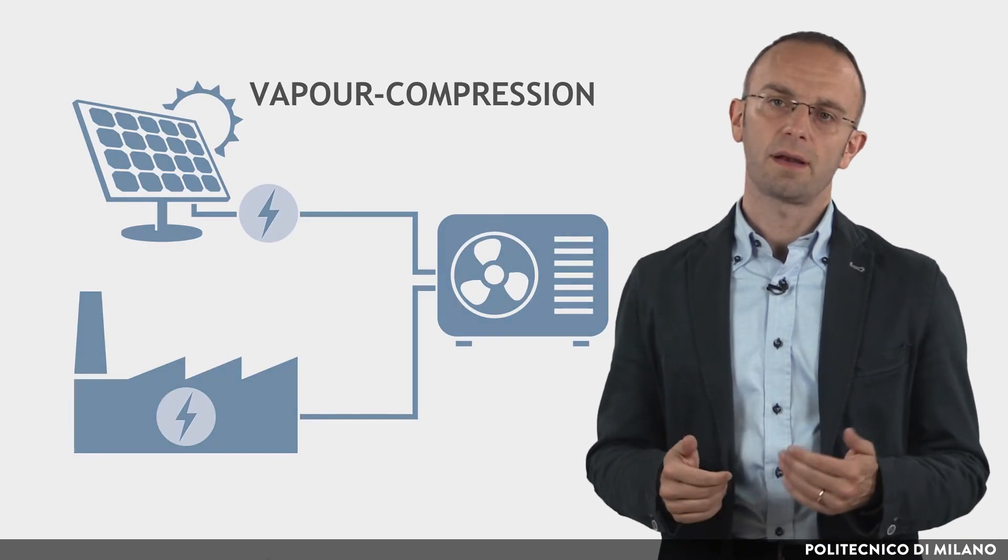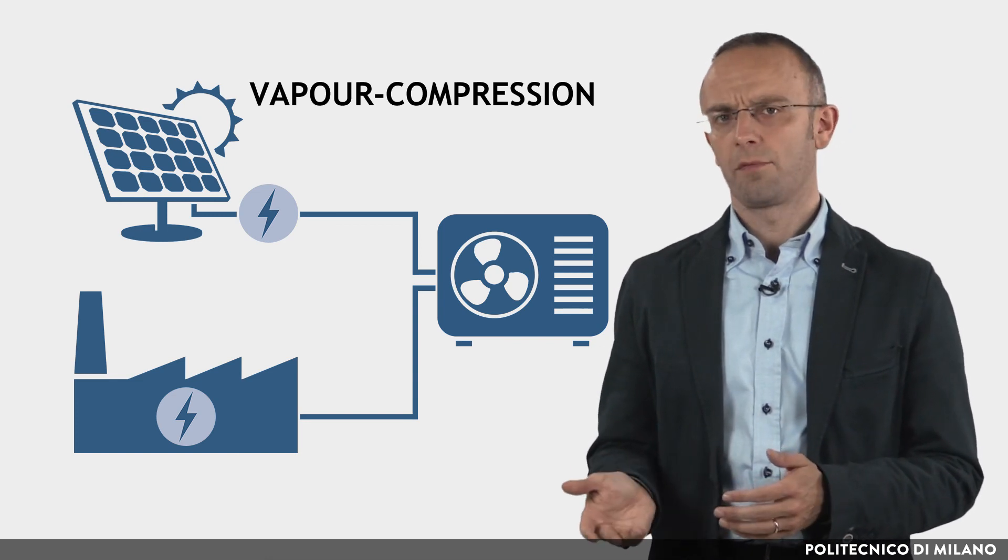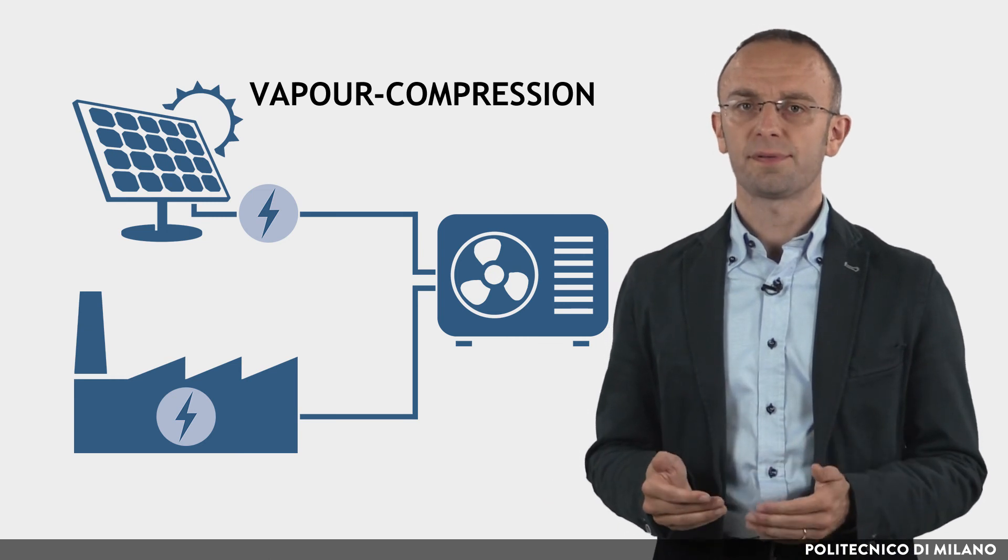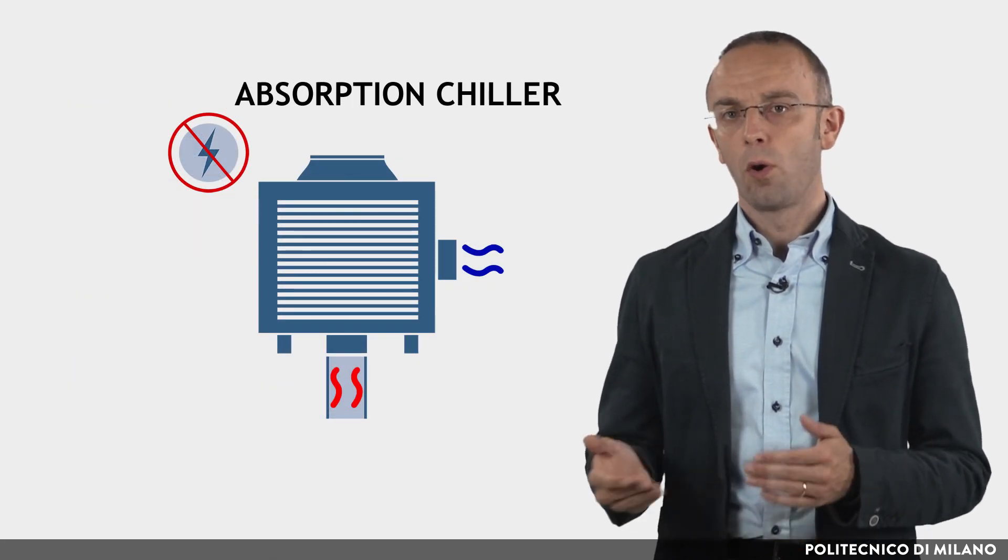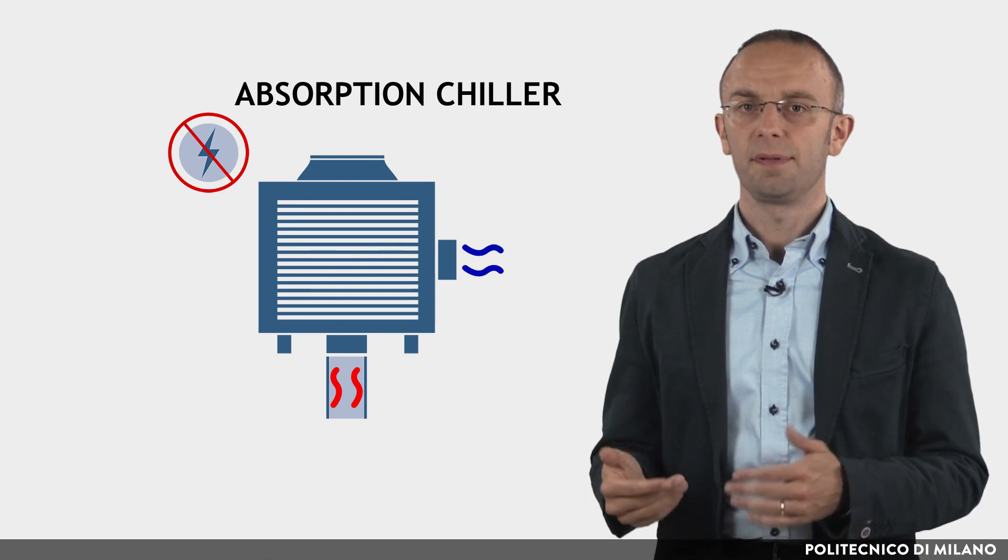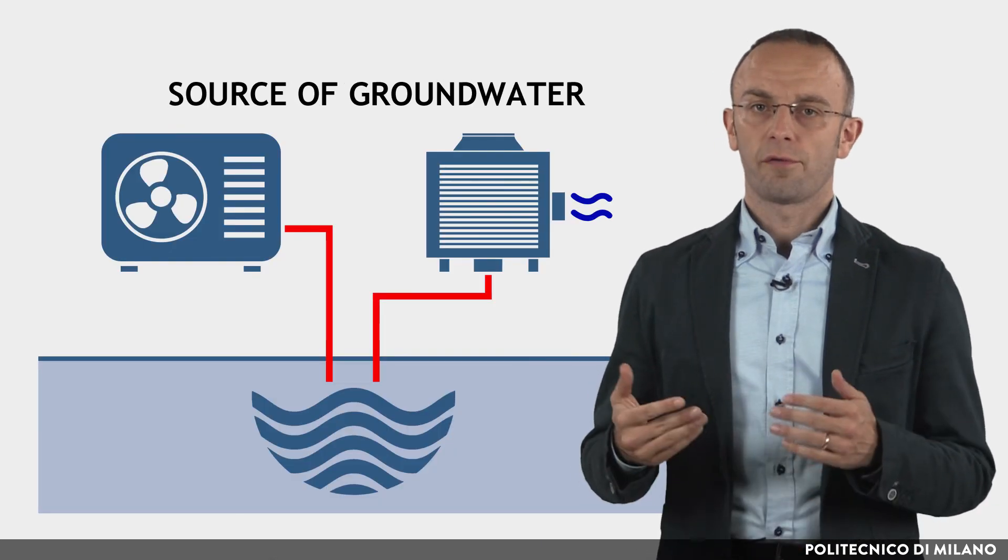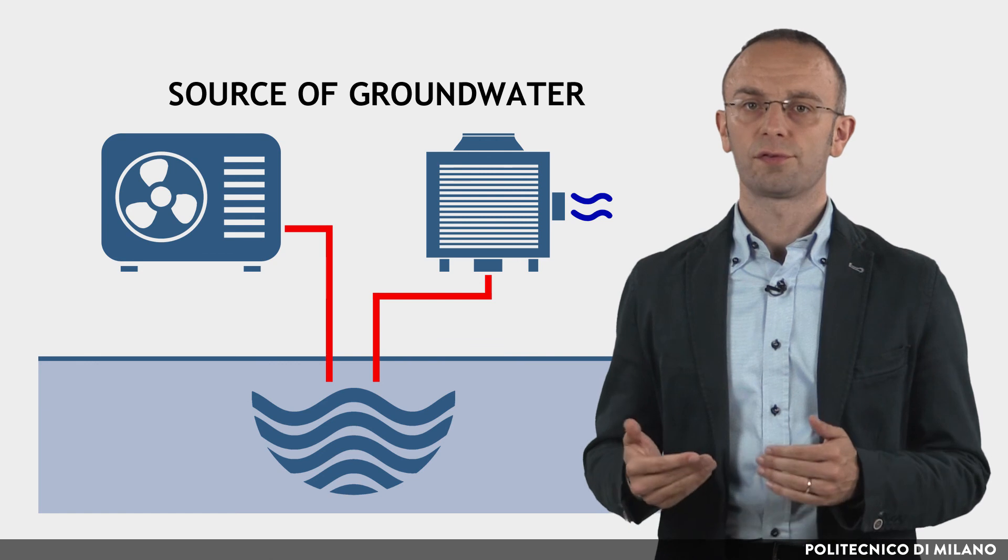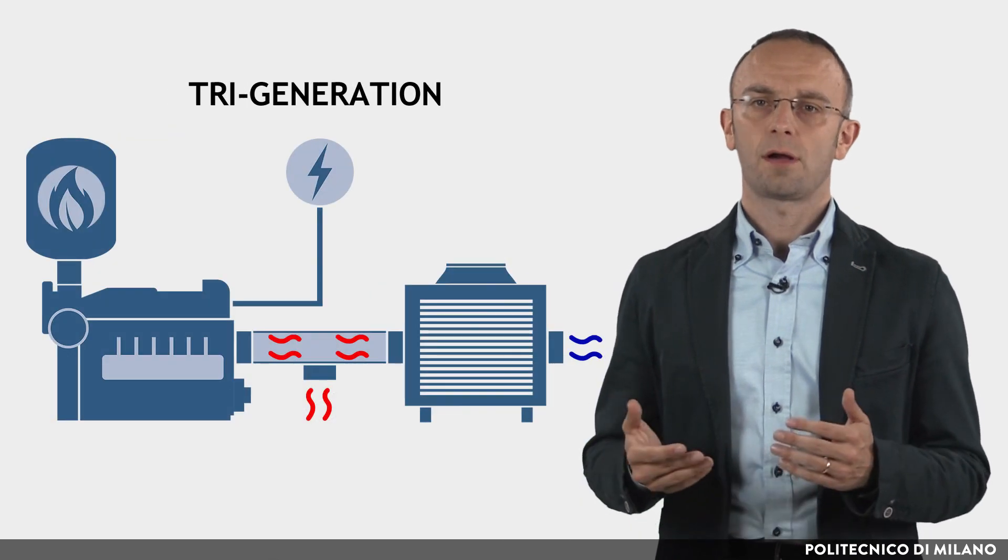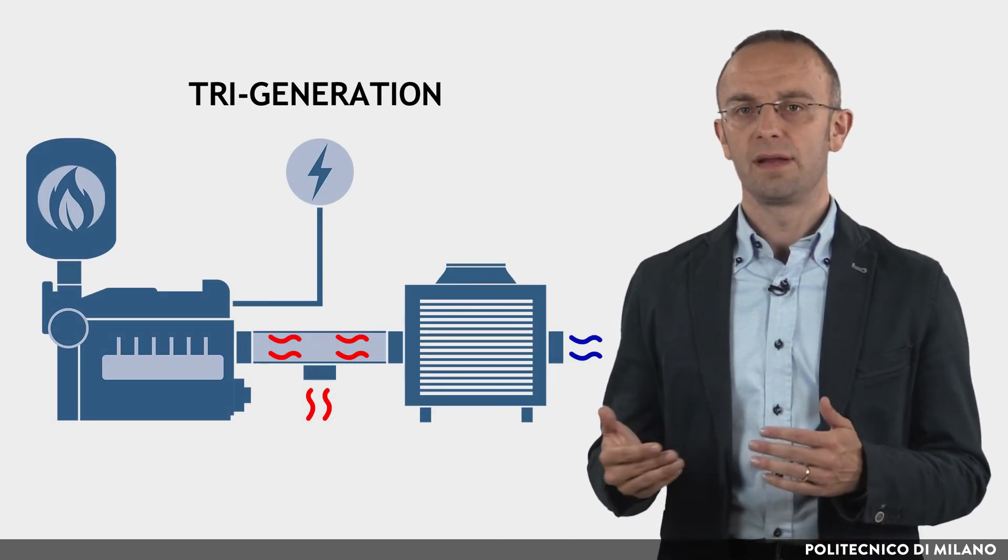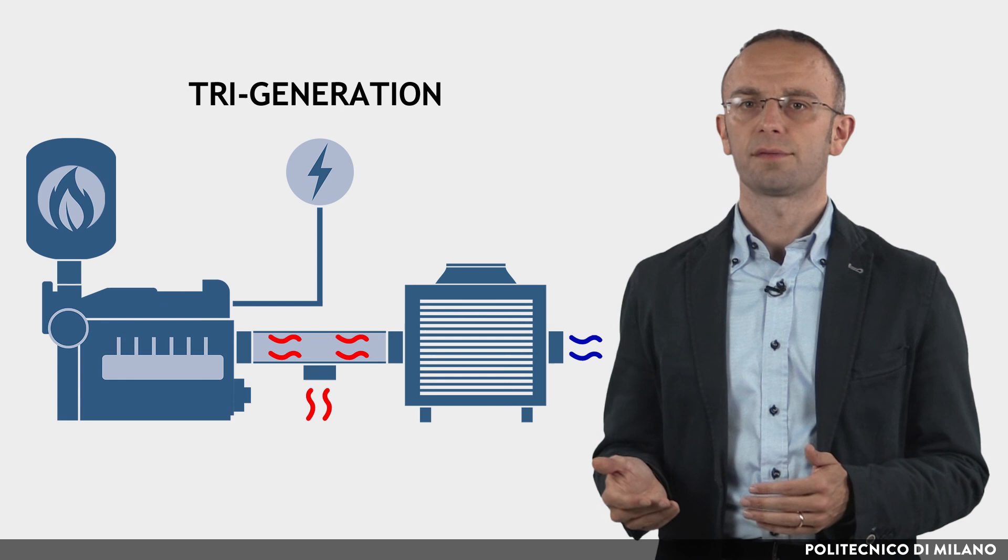In conclusion, it can be stated that if electricity from the grid is available and/or renewable electricity can be easily generated on-site, for example from photovoltaic, electric heat pumps are a very good option for heating and cooling. In presence of waste heat or low-cost heat sources, absorption chillers can be successfully used, especially if electricity is scarcely available. Both for vapor compression and absorption heat pumps, the presence of a source of groundwater allows to increase the efficiency of the system. Where there is a constant need for thermal energy and where availability of electricity from the grid is not always guaranteed, tri-generation represents an interesting technical solution.